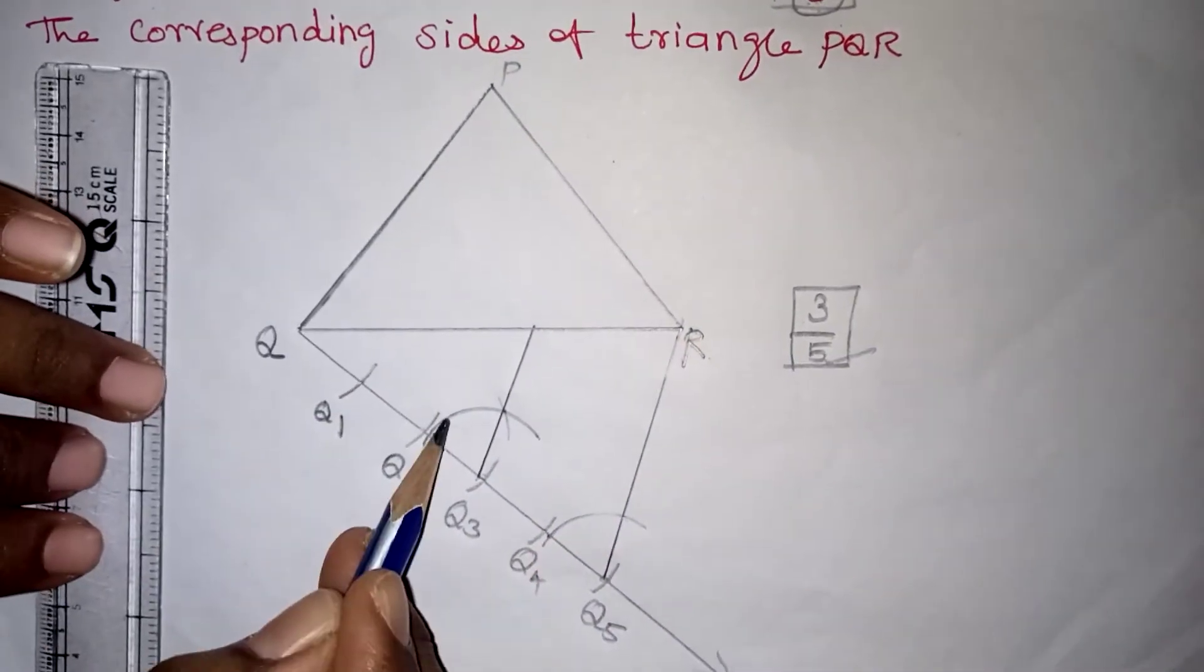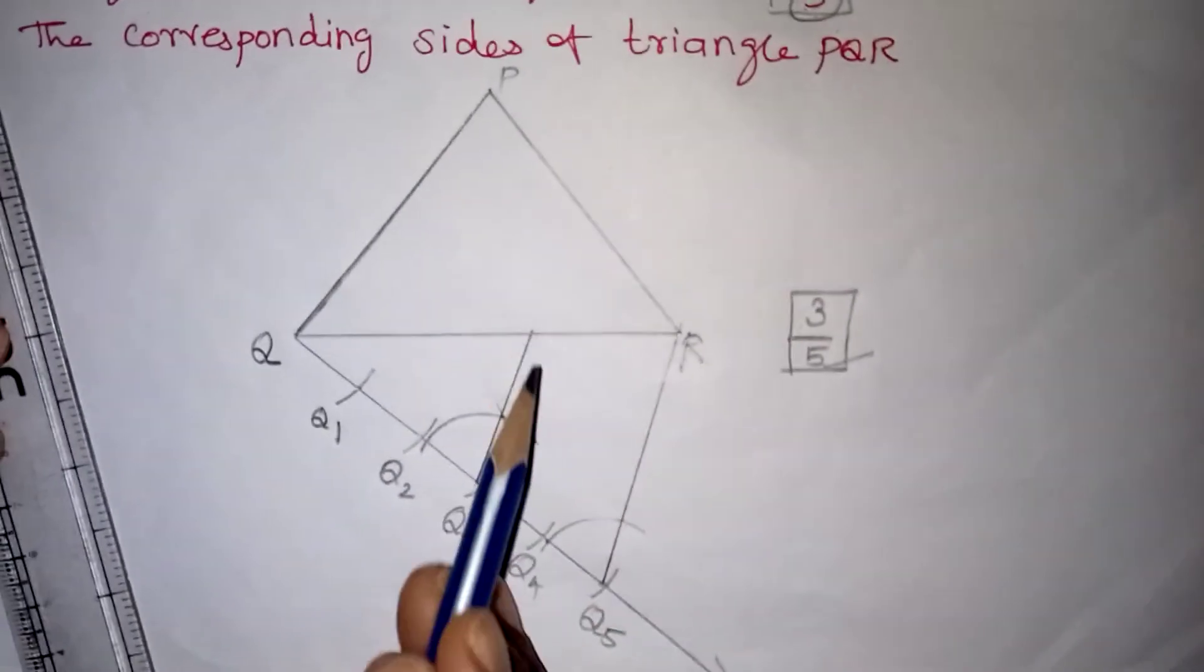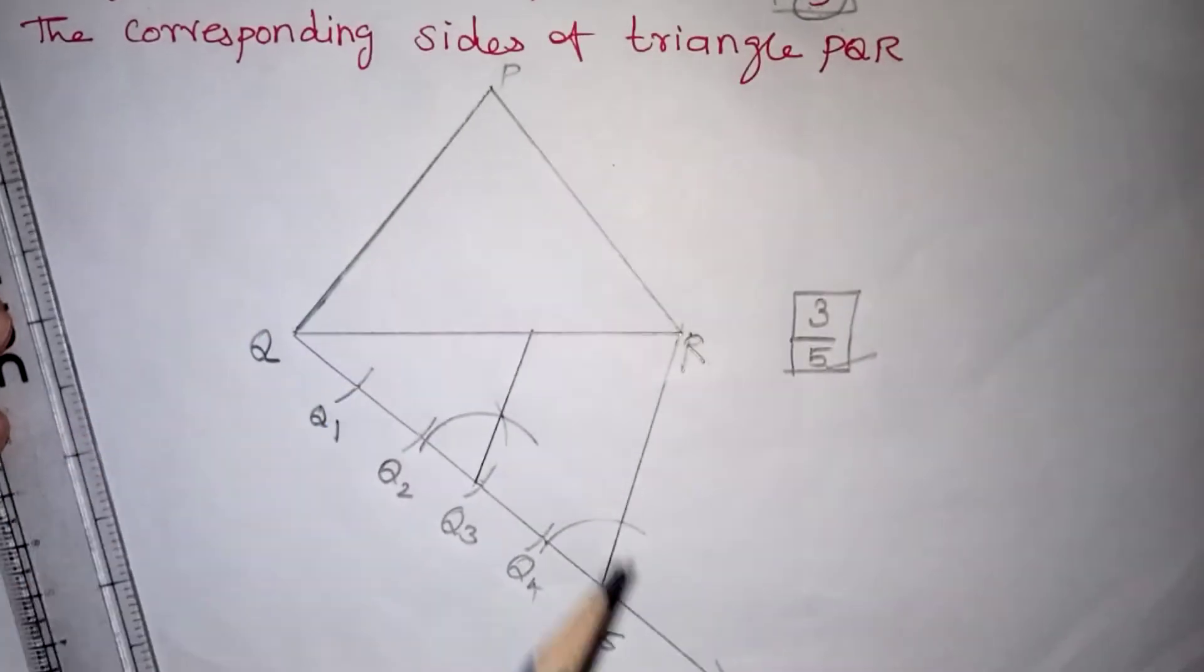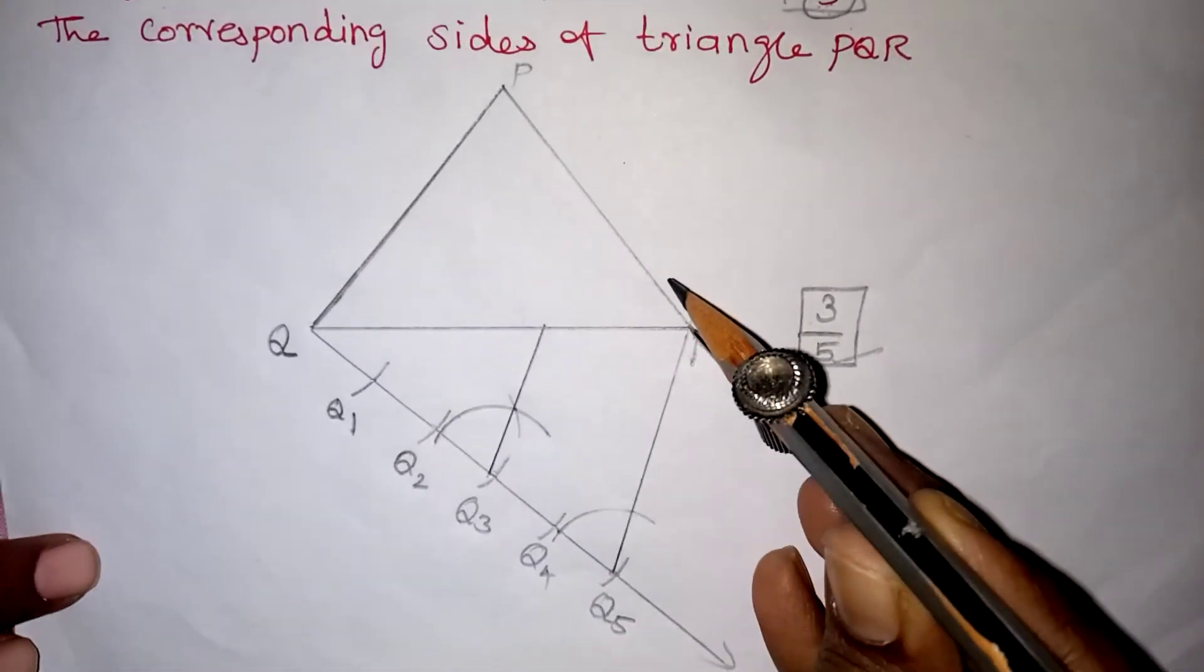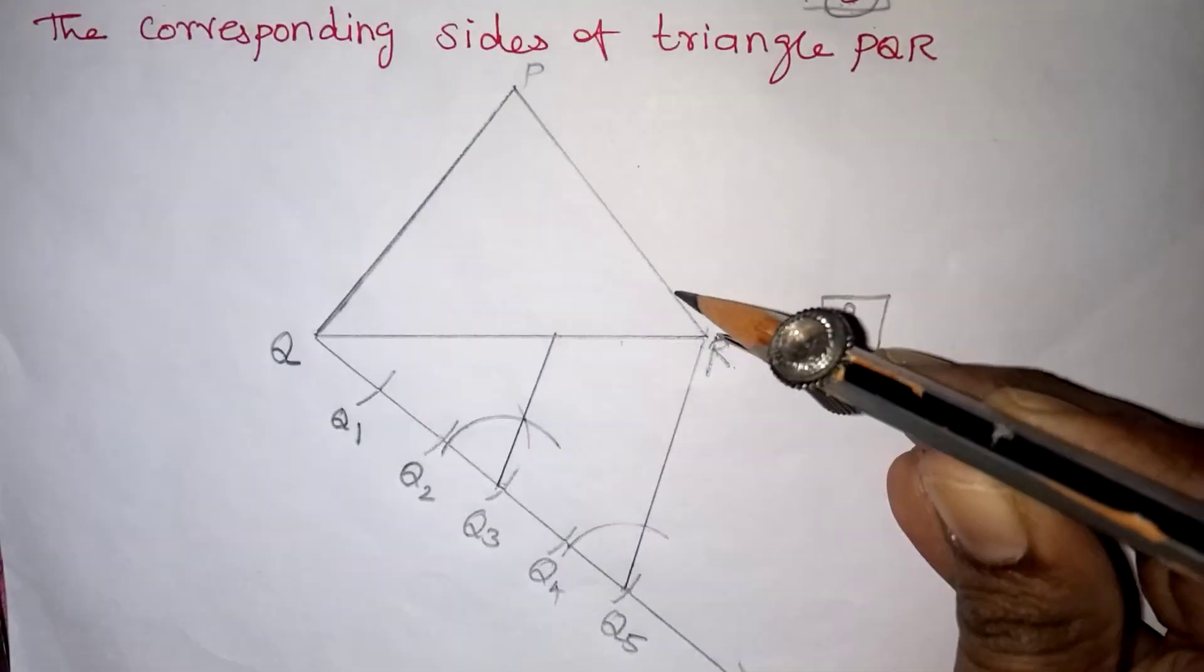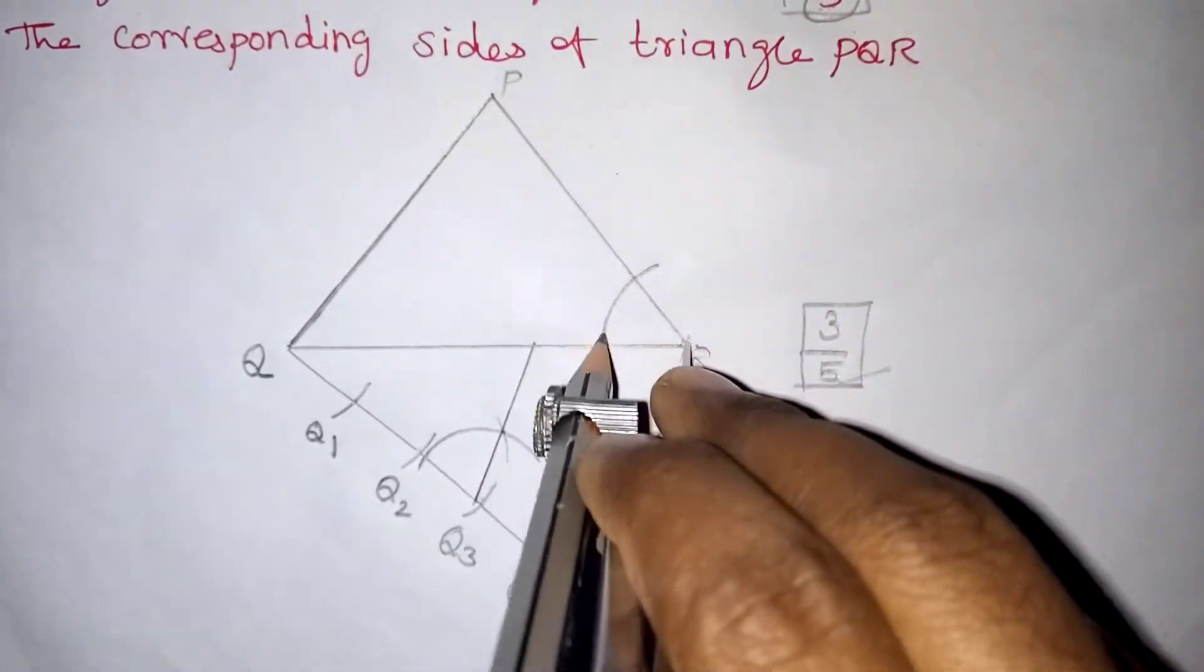This angle and this angle are equal. So corresponding angles are equal. These two lines will become parallel. The same concept we are going to do here also. Again, take your compass. Keep it in R. Just draw the arc. Any measure it can be, but you have to draw the arc in this way.